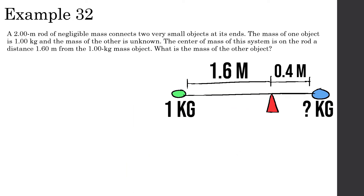A 2-meter rod of negligible mass connects two very small objects at its ends. The mass of one object is 1 kilogram and the mass of the other object is unknown. The center of mass of the system is on the rod, a distance 1.6 meters from the 1-kilogram object. What is the mass of the other object? I always like to put the zero point all the way at the left end — you can put it anywhere, but I like to put it all the way to the left.